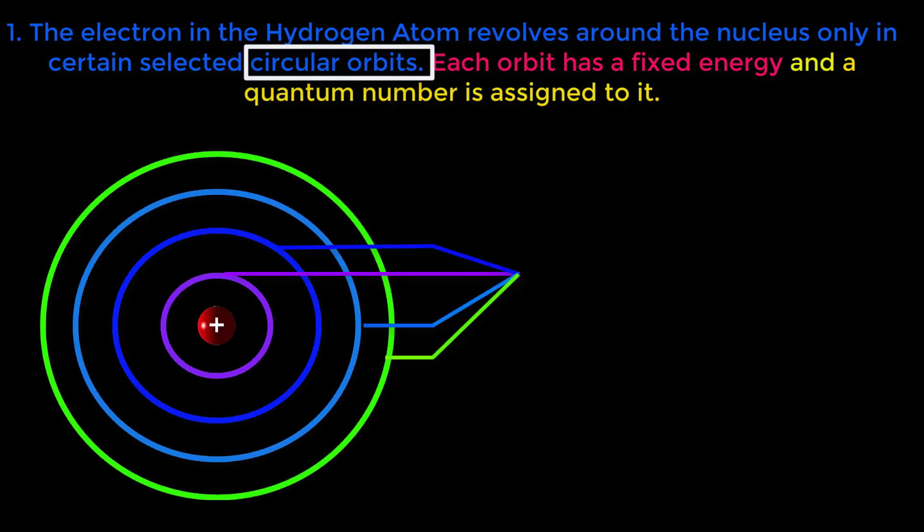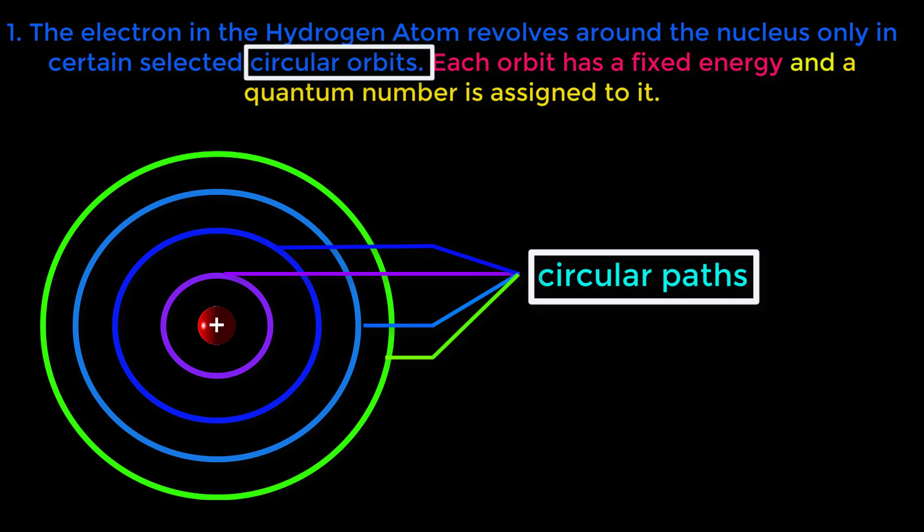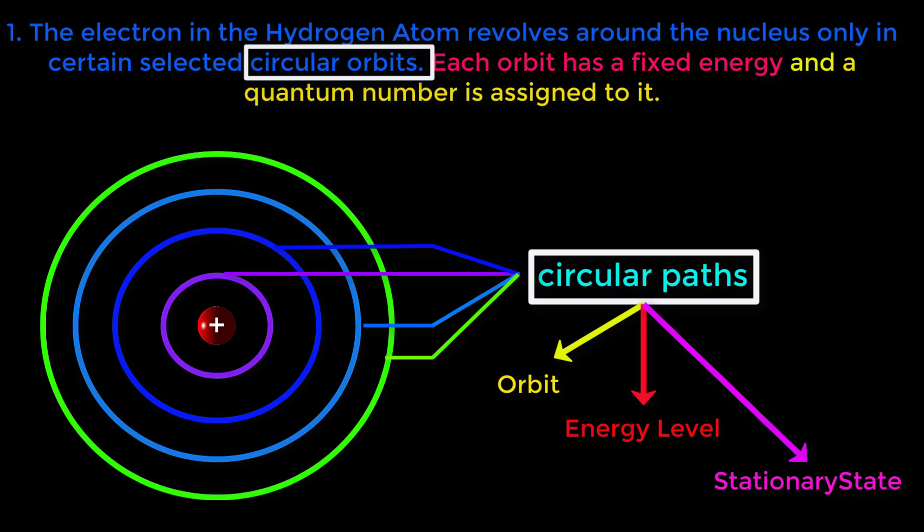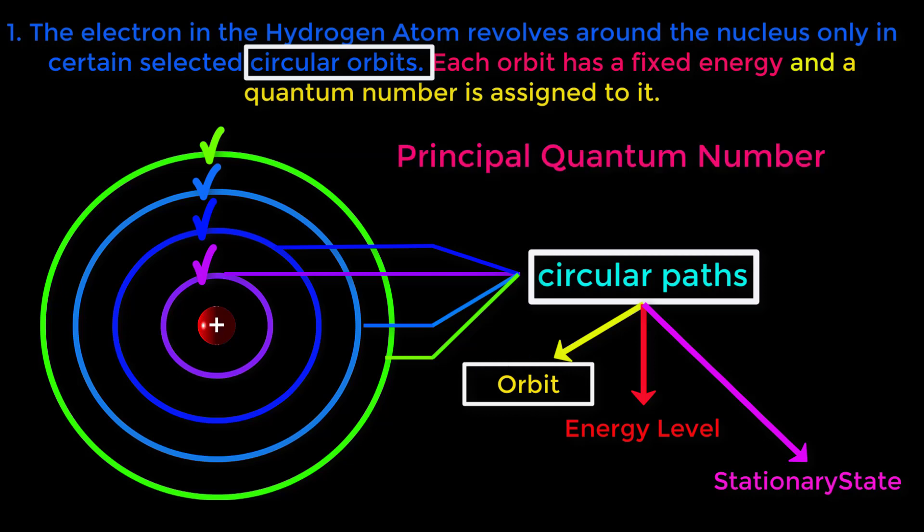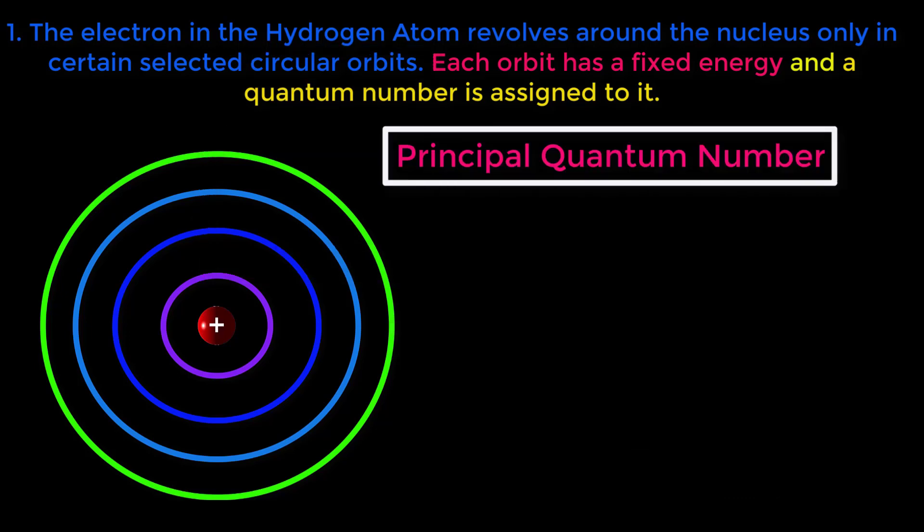See, these are the circular paths around this nucleus. There are different names of these circular paths: orbit or energy level or stationary state. Bohr assigned a quantum number for each orbit, which is called principal quantum number. Principal quantum number is denoted as small n.